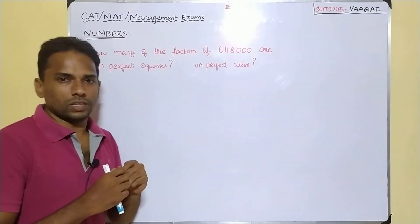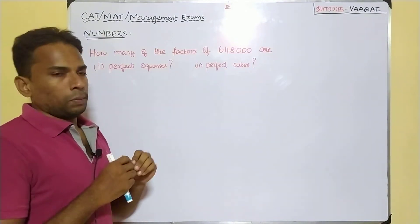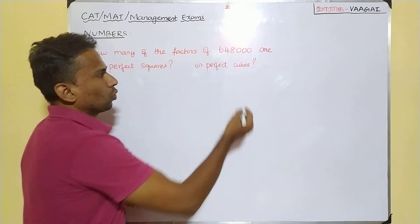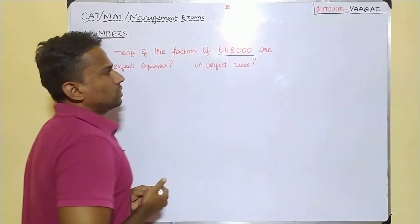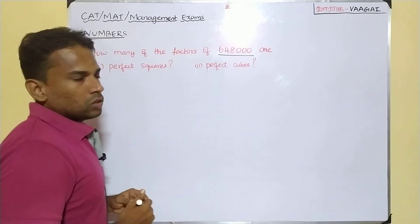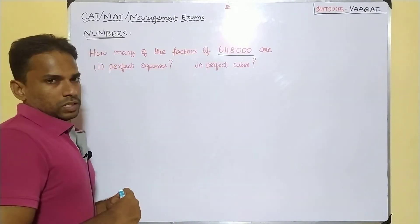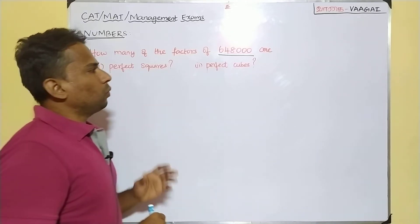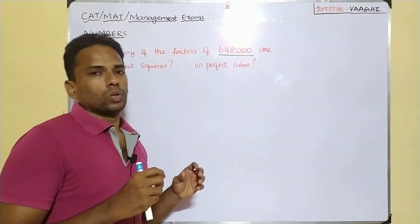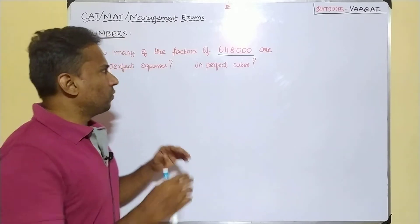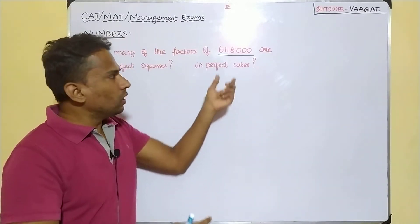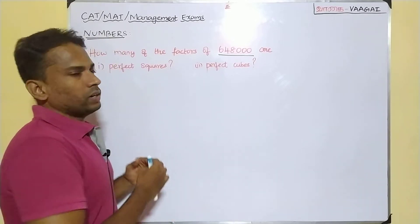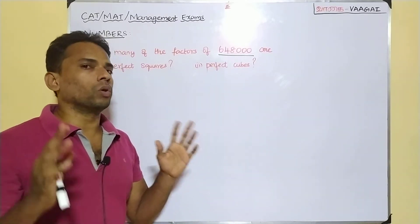Here is our question: how many of the factors of the number 6,48,000 are perfect squares, and how many are perfect cubes? So we have two subdivisions — the first one asks for perfect squares and the second for perfect cubes. We need to find the number of factors for this particular number which are going to be either perfect squares or perfect cubes.